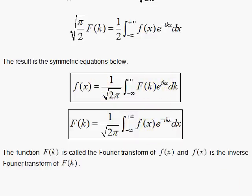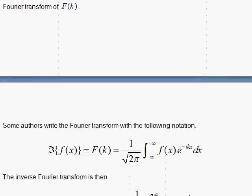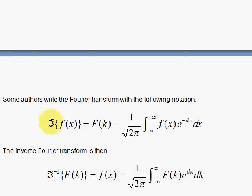Well, here is the symbol for taking the Fourier transform. The Fourier transform, a script F of f of x, is the capital F of k. That's the Fourier transform. And this is the way to write the inverse Fourier transform of the capital F of k to give you back the f of x.